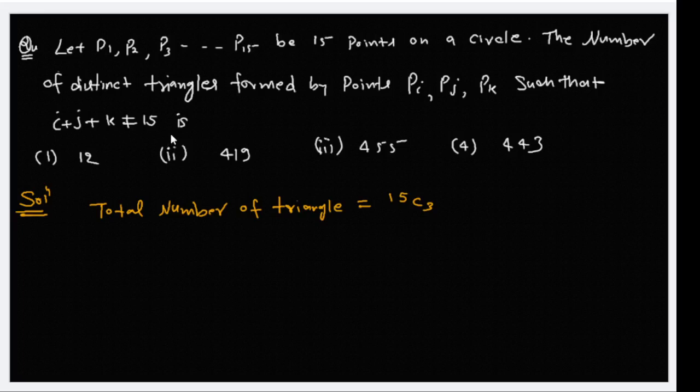Hello students, this is a question from IRTJM, the first shift of September 2021. The question is: let p1, p2, p3, up to p15 be 15 points on a circle. The number of distinct triangles formed by the points pi, pj, pk such that i plus j plus k not equal to 15 is equal to what? Four options are given.